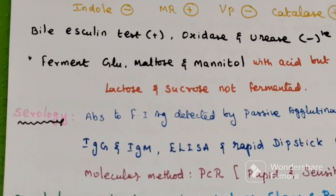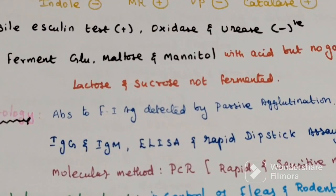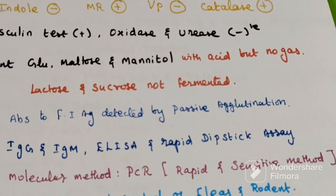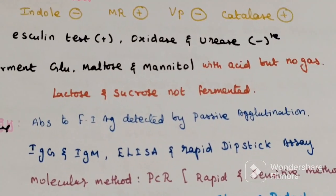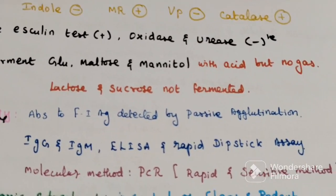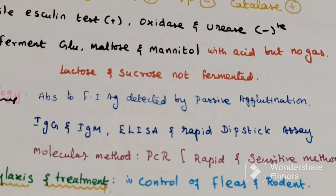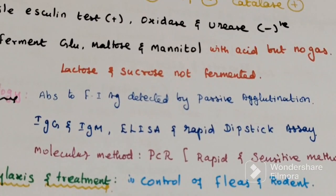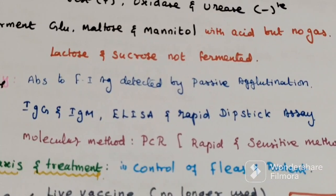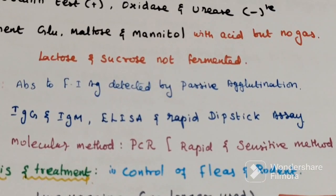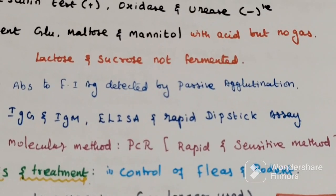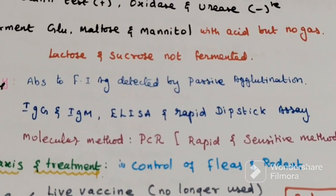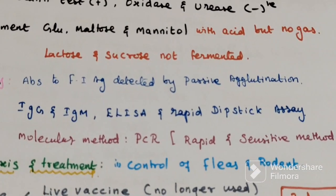Serological techniques: antibodies to Fraction I antigen detected by passive agglutination test. Other serological methods include IgG and IgM detection by ELISA test; rapid dipstick tests are also used. For molecular methods, PCR is used — it is a rapid and sensitive method.